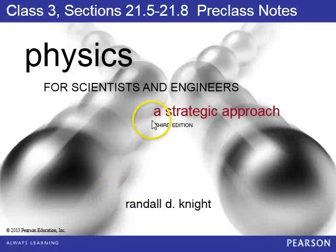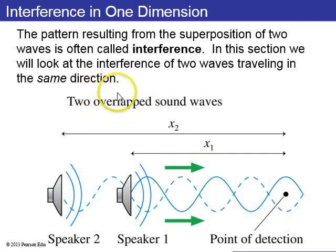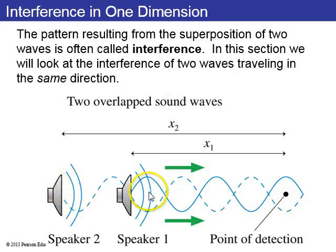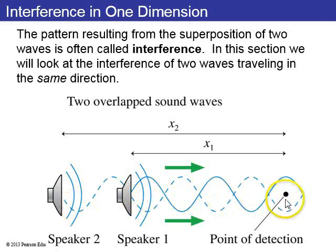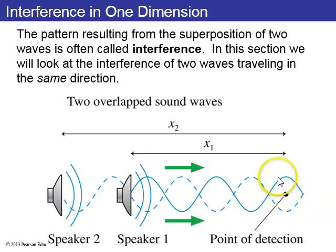Let's finish off chapter 21 on superposition. Today I want to talk about interference in one dimension. We're looking at two sinusoidal waves from different sources traveling in the same direction. Speaker 2's wave goes right past speaker 1, and both waves add up at the point of detection where we're listening. This is called interference.